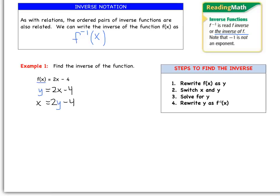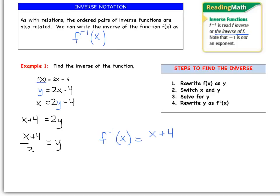We're simply swapping the positions of x and y. Step 3 is to solve for y. Add 4 to both sides: x + 4 = 2y. Then divide both sides by 2, giving us y = (x + 4) / 2. Step 4: write y as f inverse of x using proper notation. So f⁻¹(x) = (x + 4) / 2.